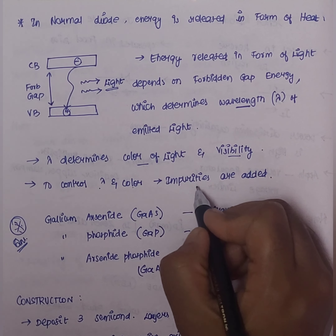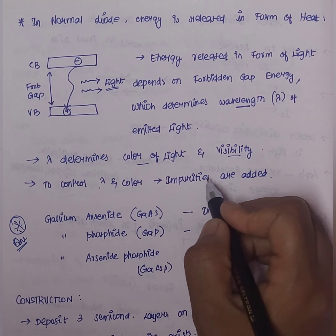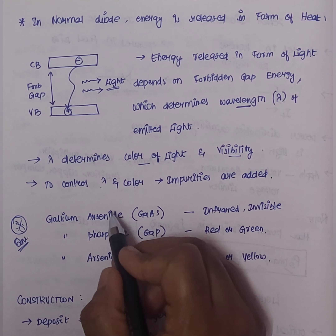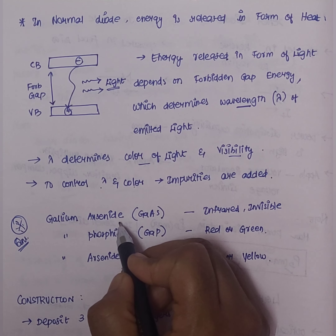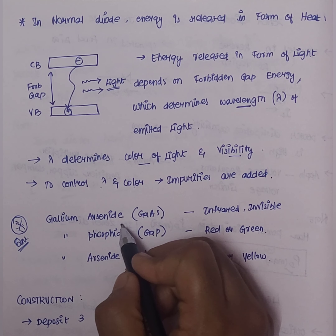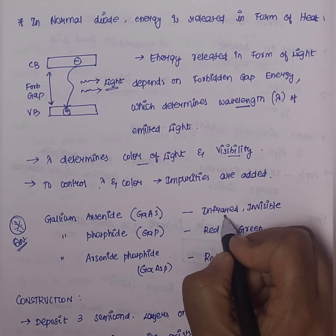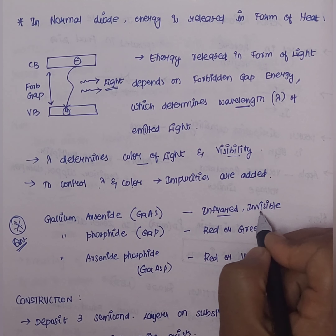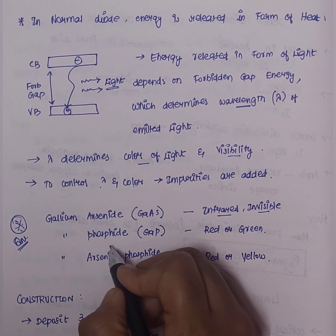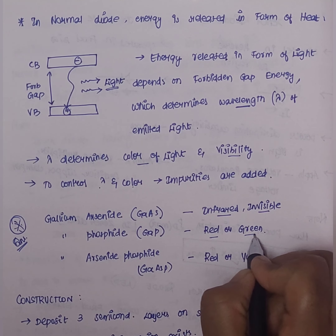We add impurities to get different types of LED. The first type uses gallium arsenide — the light emitted is infrared and invisible. The next type uses gallium phosphide, where the color is red or green.